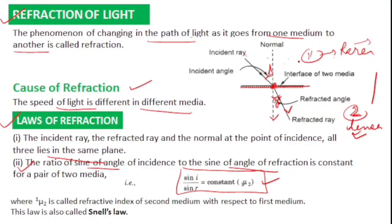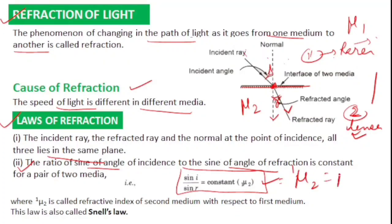When light travels from medium one (refractive index μ₁) to medium two (refractive index μ₂), Snell's law gives sin i / sin r = μ₂/μ₁, also written as μ₂₁. This is Snell's law.